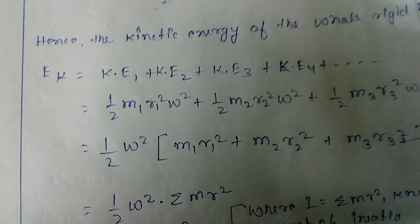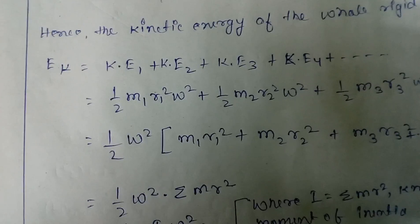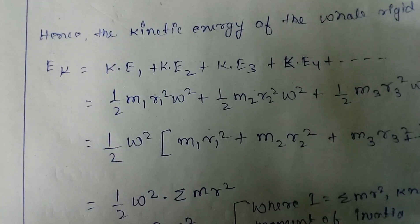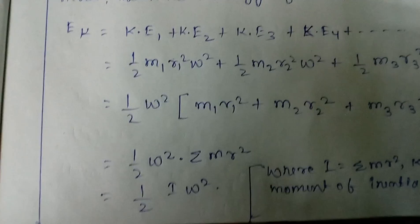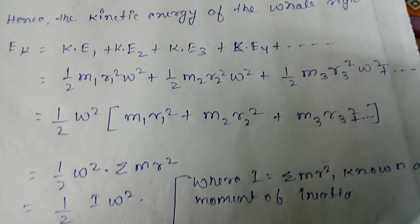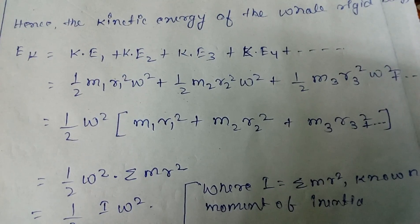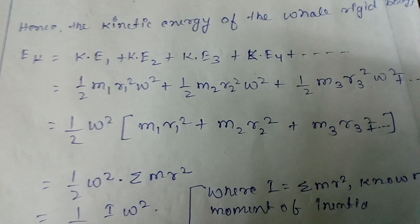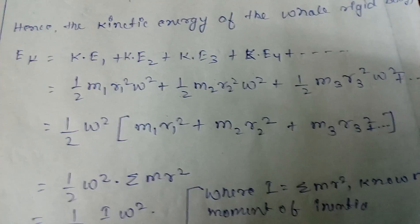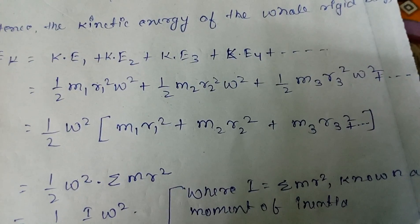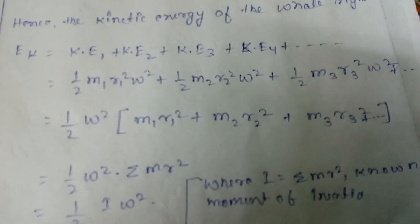So whatever this is, half omega square dot summation of m r square. We can write this as summation of m r square, the summation of all the m1 and r1 square of all the particles of the rigid body. Here we can see that I equals, let's just suppose that I equals summation of m r square. We can say this is moment of inertia.